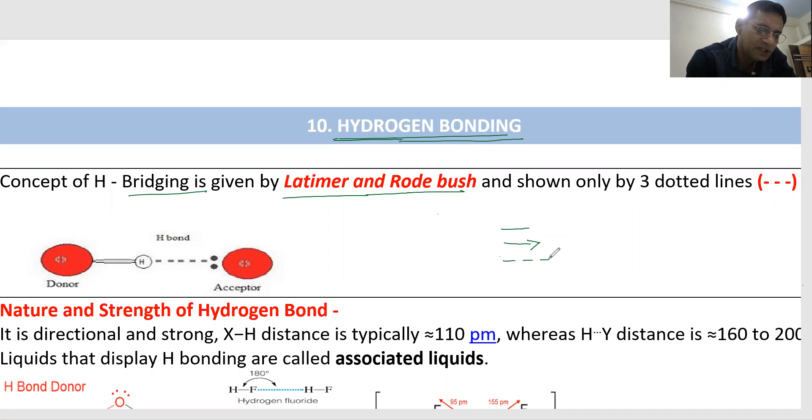This is covalent bond, this is coordinate bond or data bond or bipolar bond, and this is hydrogen bond. For metallic bond there is no notation, for ionic bond there is no such notation.